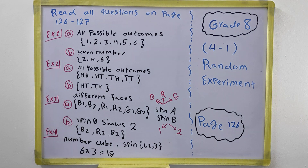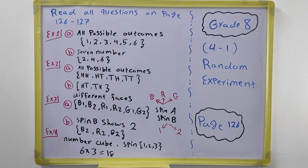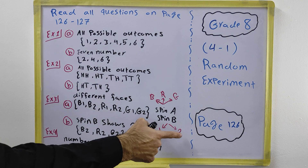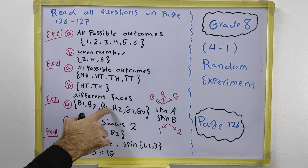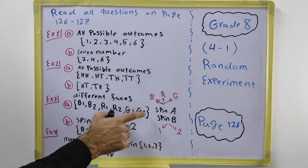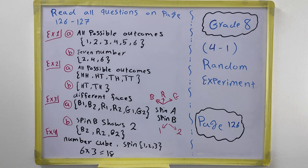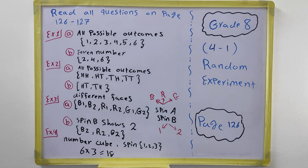In the number cube we always have six possible outcomes. In the spinner we have one, two, three — that is three possible outcomes. We multiply: three times six, or six times three, equals eighteen possible outcomes. In compound experiments, you can always find the number of possible outcomes by multiplying the counts together. That's all about random experiments in Section 4.1 — thanks for watching, have a nice day.